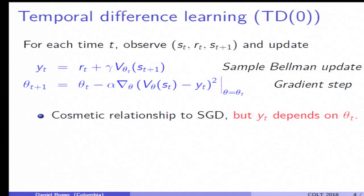TD is the following simple scheme for coming up with those estimates. At time t, I observe my current state, the reward I've received, and the next state.